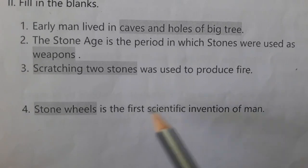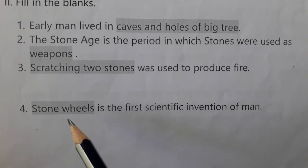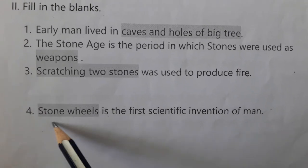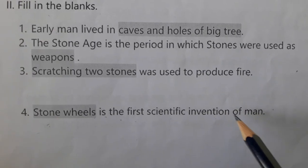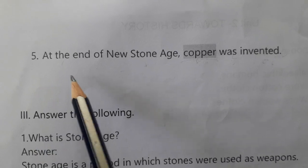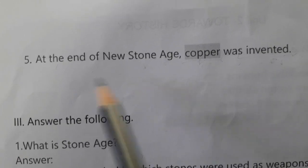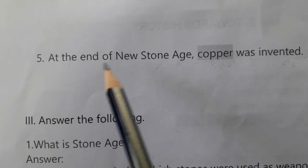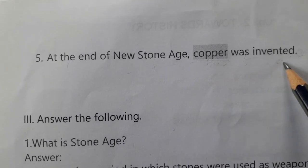Fourth question: ___ is the first scientific invention of men. Answer: Stone wheels. Stone wheels is the first scientific invention of men. Fifth question: At the end of the new stone age, ___ was invented. Answer: Copper. At the end of the new stone age, copper was invented.